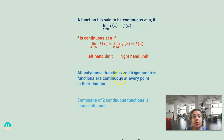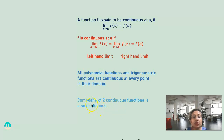All polynomial functions and trigonometric functions are continuous at every point in their domain. The composite of two continuous functions is also continuous. For example, if x is continuous and mod is continuous, then mod x also becomes continuous.